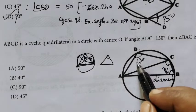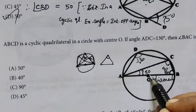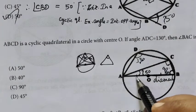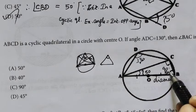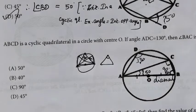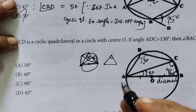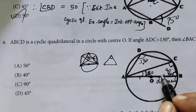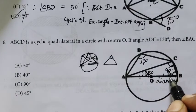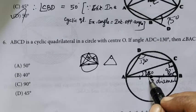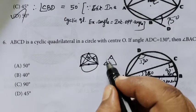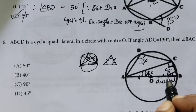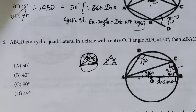It is 180 minus 130 equals 50. Since this is the diameter, this is the radius. If the sides are equal the base angles are equal. Using 90 degrees: 90 plus 50 is 140, and 180 minus 140 equals 40. The answer for this is 40.